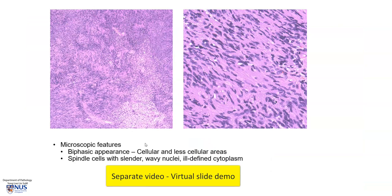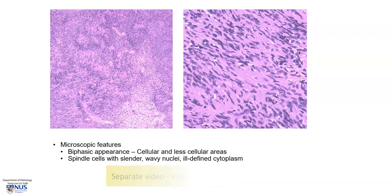There is actually a separate video describing the microscopic features on a virtual microscopy slide. However, just briefly, these tumors have a biphasic appearance, especially the larger tumors — you can see there are more cellular compact areas interspersed with less cellular areas. The tumors are composed of very spindle Schwann cells with slender, wavy nuclei.